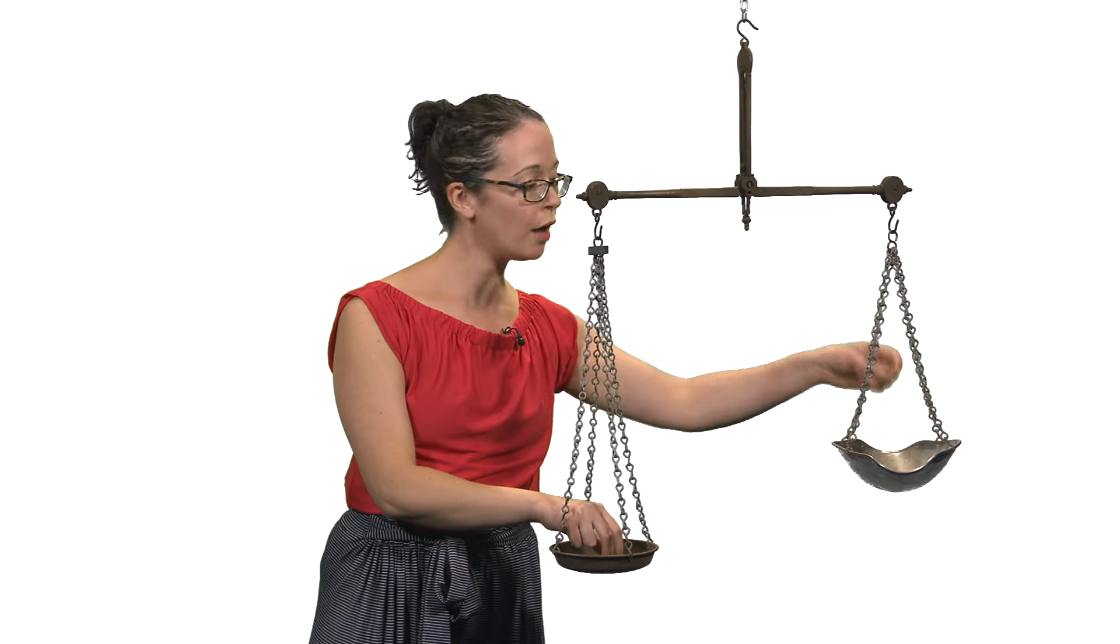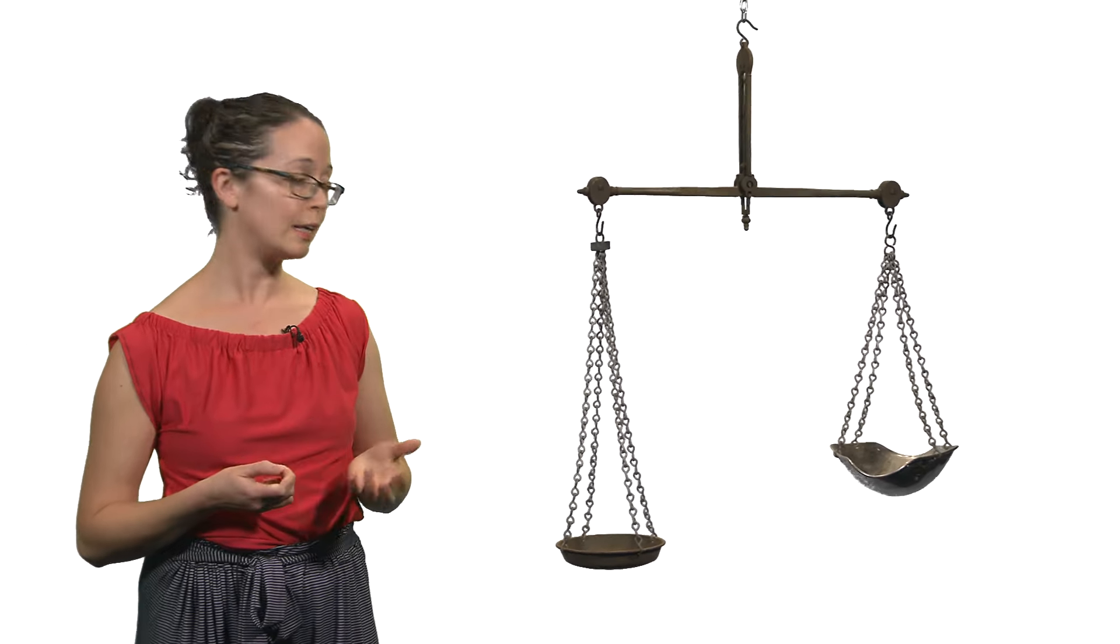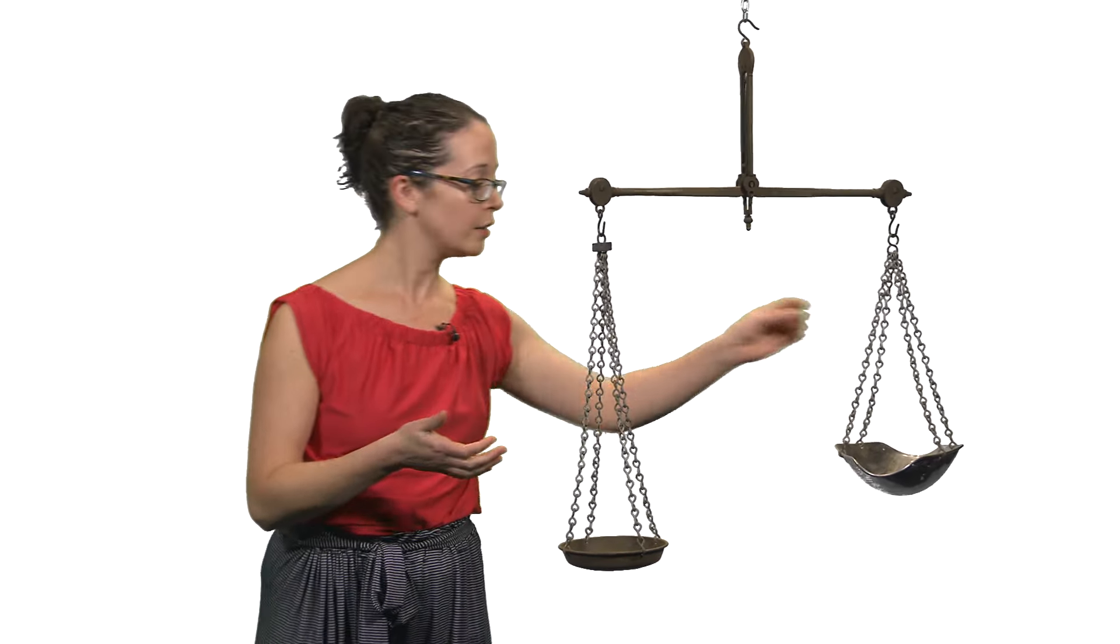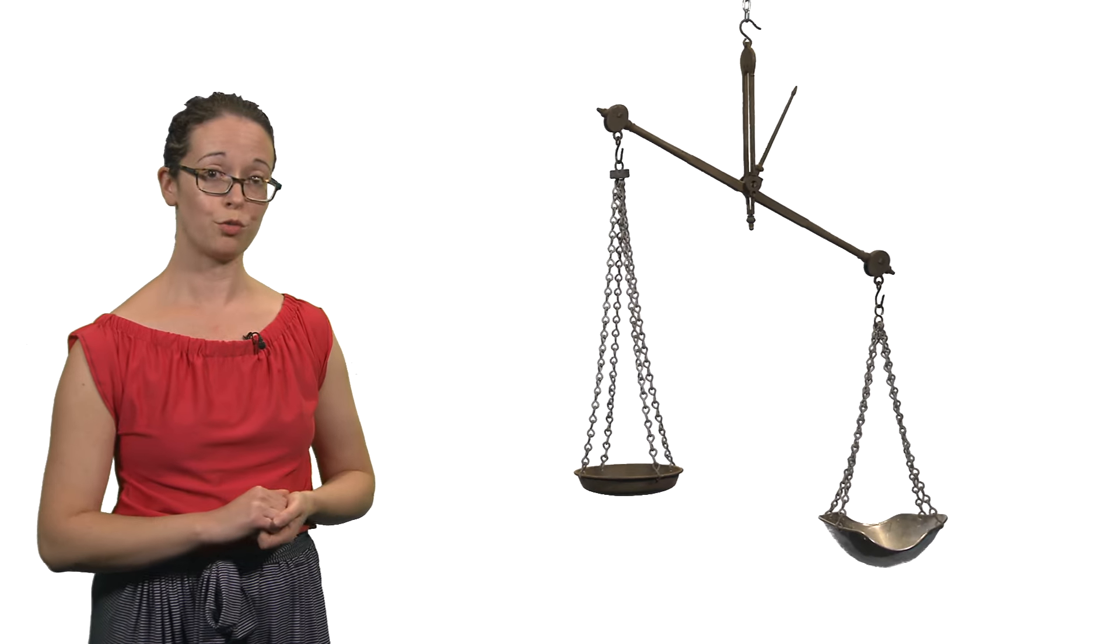Now let's imagine we have some evidence for each of the null and the alternative hypotheses. Here on the left, the null hypothesis, and here on the right, the alternative hypothesis. Now we have to assume that the null hypothesis is true, unless it can be proven to be wrong. So as we start to sample from the population of interest, it may be that the weight of evidence starts to fall in favour of the alternative hypothesis, and increasingly so until we accept this new knowledge as truth.